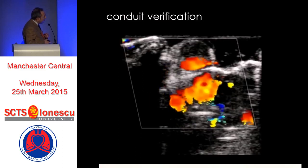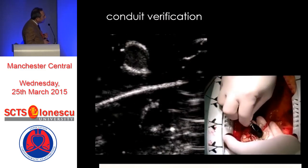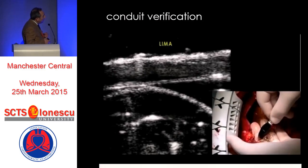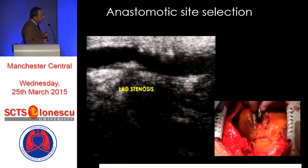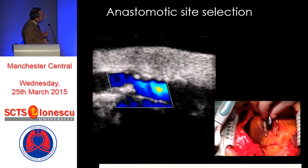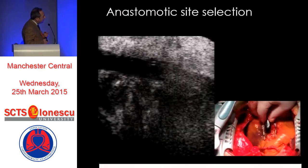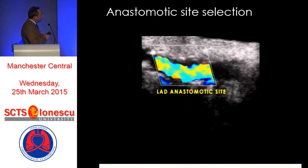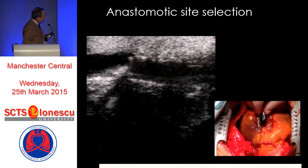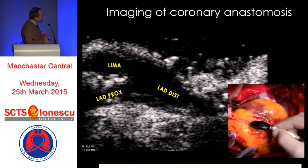This shows an intimal flap, and then we performed the anastomosis. We can use imaging to select the optimal site for the anastomosis. In this case, we confirmed the diagnosis of a severe stenosis in the LAD, then chose an alternative site for the anastomosis. We can also measure within the internal lumen of the coronary arteries, and this shows the anastomosis at the end of the procedure.